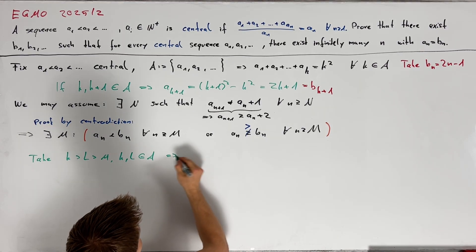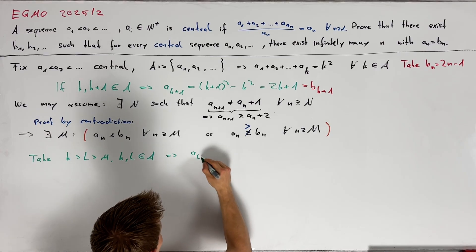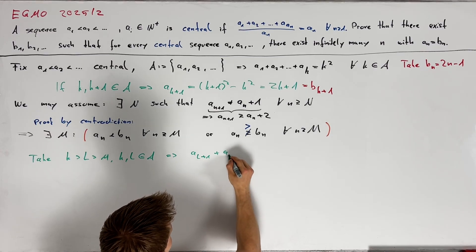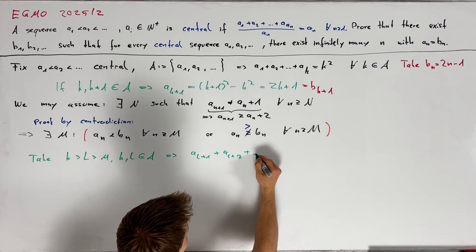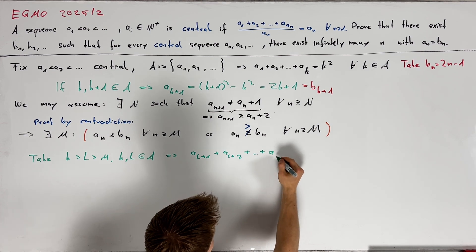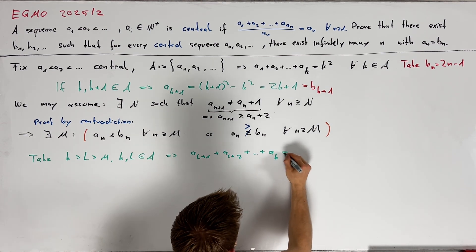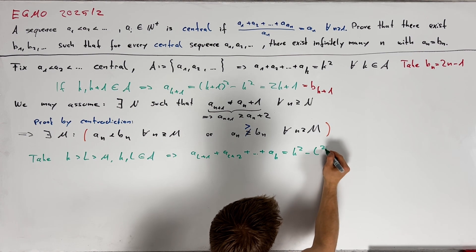This allows us to write the sum a_{l+1} plus a_{l+2} and so on up to plus ak as k squared minus l squared.